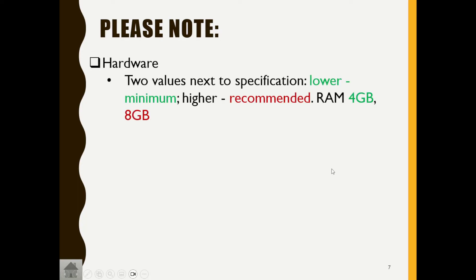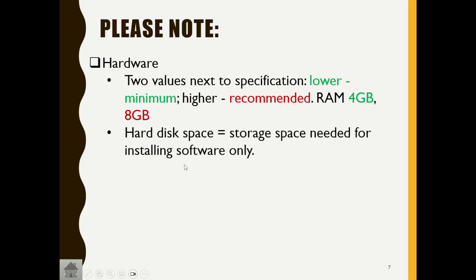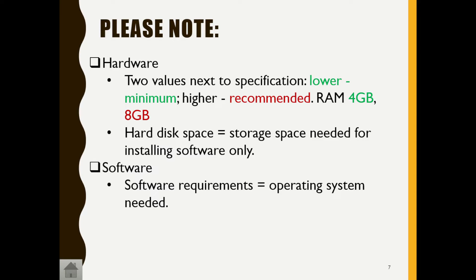Please note: hardware specifications show two values — the lower one is the minimum and the higher one is the recommended. So if RAM says 4GB and 8GB, the minimum is 4GB and the recommended is 8GB. Hard disk space refers to the storage space needed just to install the software — it doesn't mean storage for the game to save information. That space is solely for installation, nothing else.